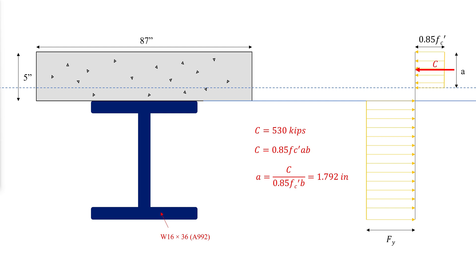The resultant tensile force T, which is equal to C, will be located at the centroid of the steel area. The moment arm of the couple formed by C and T is equal to 12.05 inches.